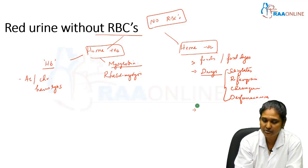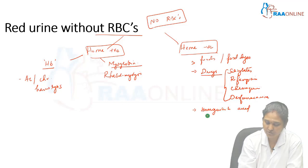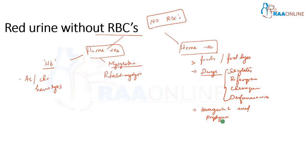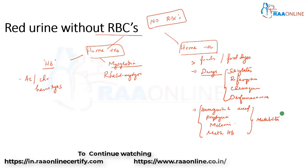Red urine can also be caused by metabolites in the urine — mostly homogentisic acid, porphyrins in the case of porphyrinurias, melanin pigment, or methemoglobin. In all these conditions, the metabolites cause red-colored urine. So these are all the conditions where you get red-colored urine without RBCs, not due to hemoglobin or myoglobin, but due to certain dyes, drug-induced causes, or metabolites.